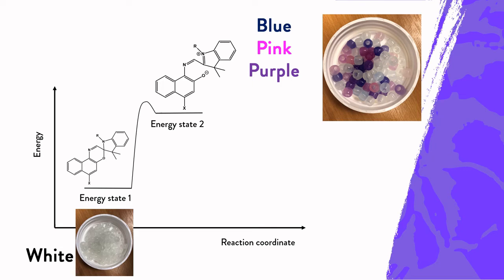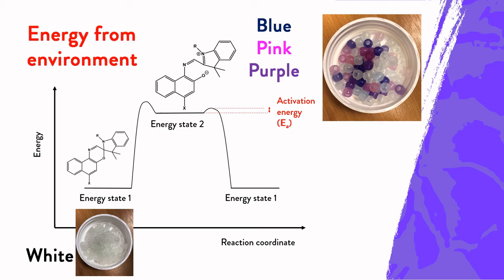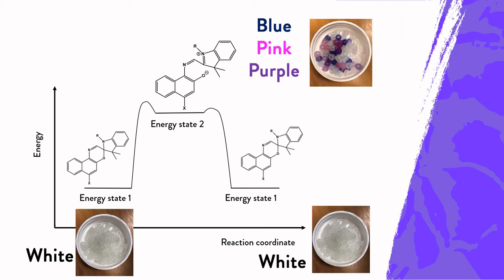This colour change is reversible, and the heat in the surrounding environment — such as room temperature — is enough to overcome the small activation energy barrier, allowing the dye molecule to go back from energy state two, which is the coloured state, to energy state one, which is white or colourless.